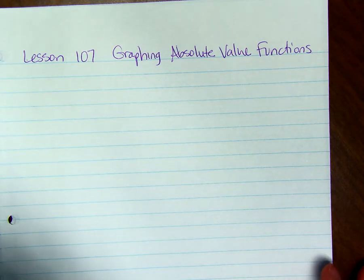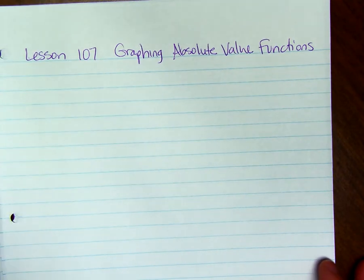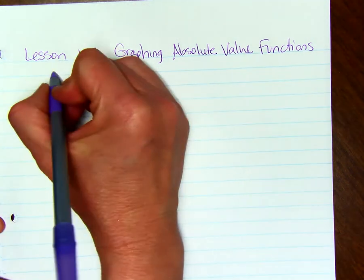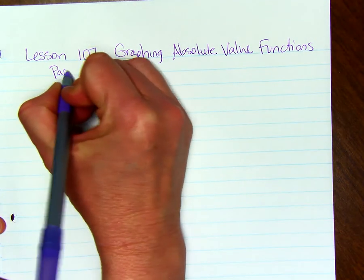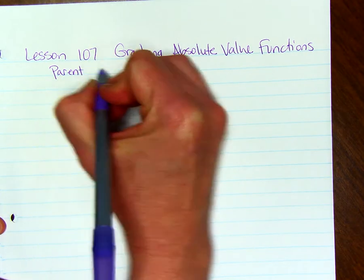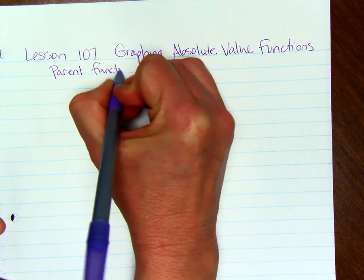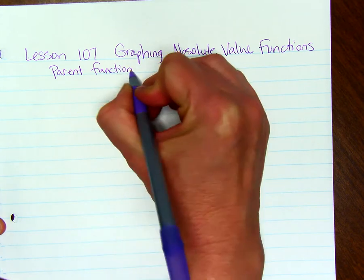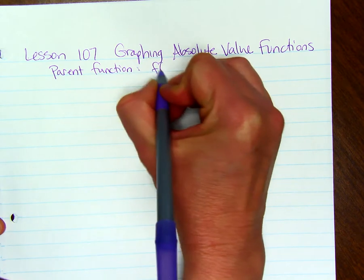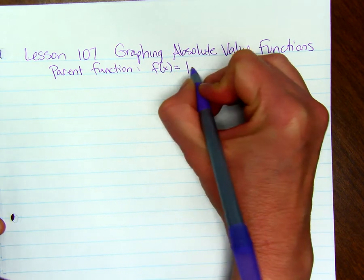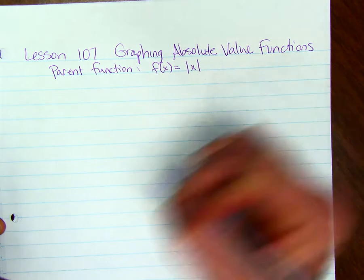Lesson 107: graphing absolute value functions. We're going to start by talking about what the parent function is for absolute values. The parent function is f of x equals the absolute value of x.